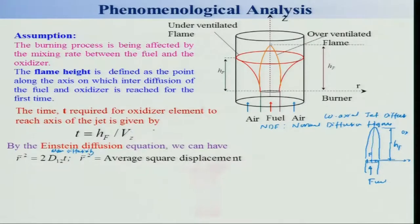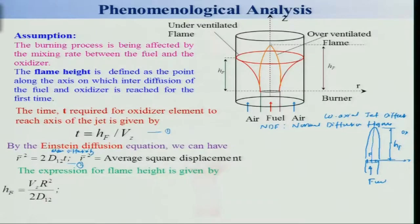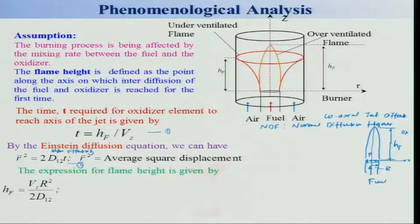Combining these expressions, h_f = v_z × t, and substituting t = r² / (2 D₁₂), we get h_f = v_z r² / (2 D₁₂). Multiplying numerator and denominator by π, we see that π r² is the cross-sectional area at the jet inlet — that is the volumetric flow rate divided by 2π D₁₂. Here r is the jet radius (from orifice or pipe), which is the maximum distance the oxidizer must diffuse to establish the flame height.